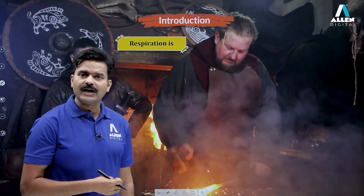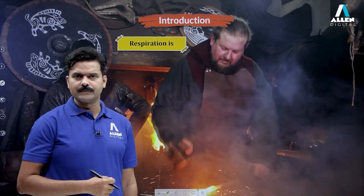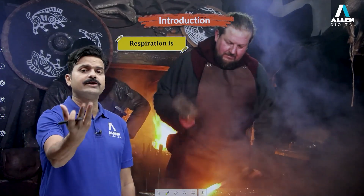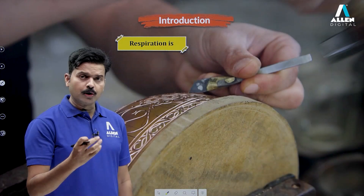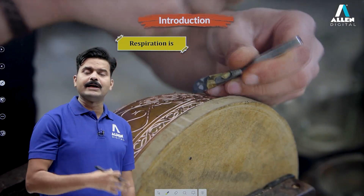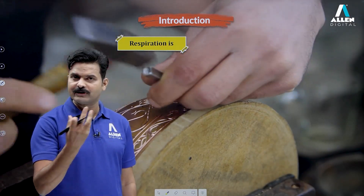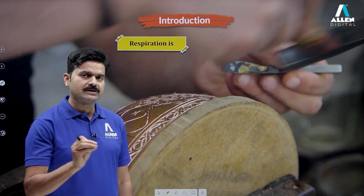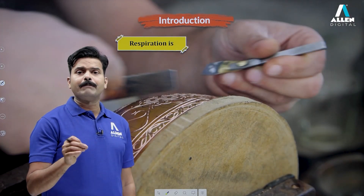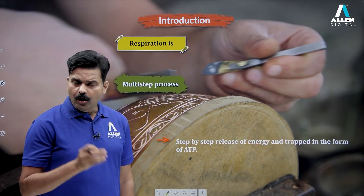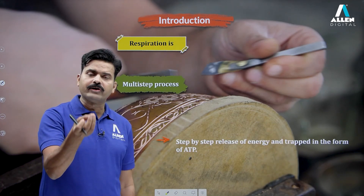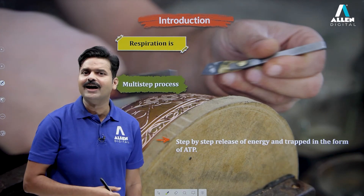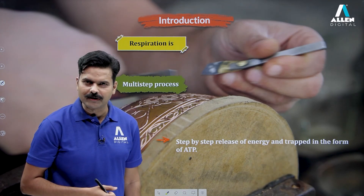Similarly, respiration is called a multi-step process. It is not carried out in a single step because if all the energy were released at once, it could damage biological or living systems. Therefore, it is carried out in many small steps — energy is released step by step and trapped in ATP molecules, as the saying goes: a hundred goldsmith's blows equal one blacksmith's blow.